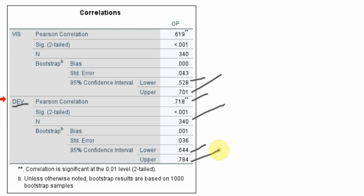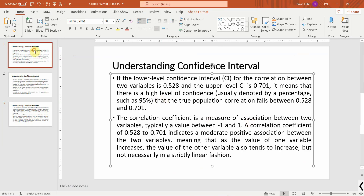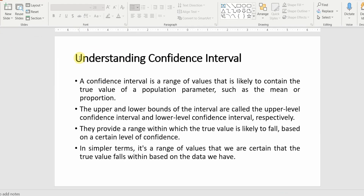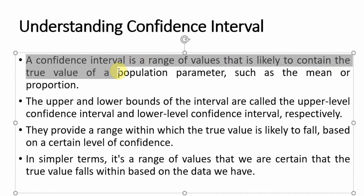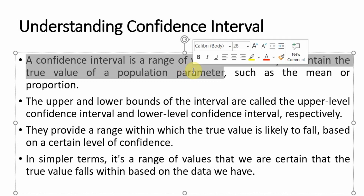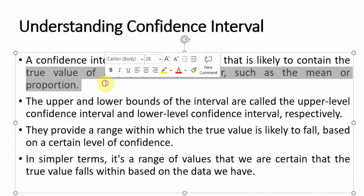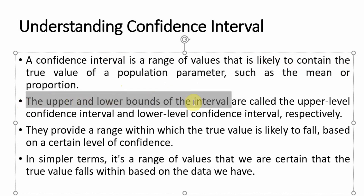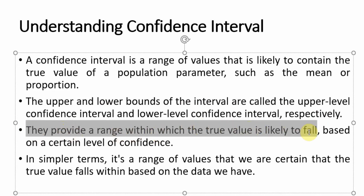Now what do we mean by this confidence interval? A confidence interval is a range of values that is likely to contain the true value of a population parameter. Since we cannot study the population, we use confidence intervals to provide us with the true value of the population parameter, such as the mean or proportion. The upper and lower bounds are called the upper level and lower level confidence interval, and they provide a range within which the true value is likely to fall.